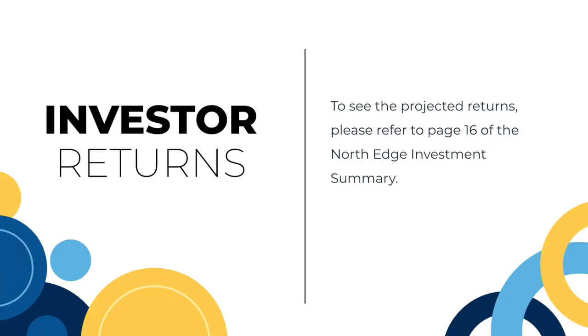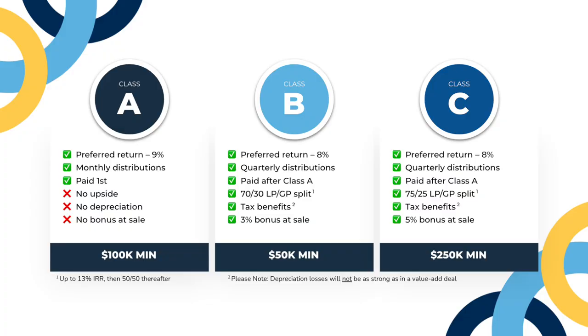The IRR is 9% and the average annual return is 9% because Class A does not have profit sharing. You are prioritizing that monthly cash flow and your safety at the top of the stack. You are sacrificing the LP/GP split at the end, but it's great when you want monthly income, knowing you'll be first in line to get paid and have a bit more safety compared to Class B and C.